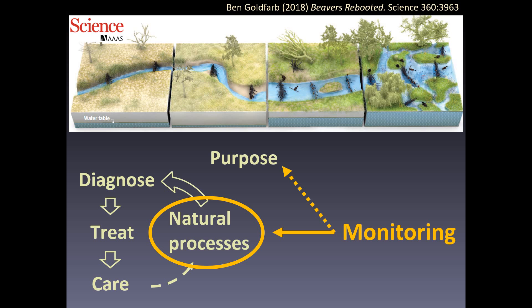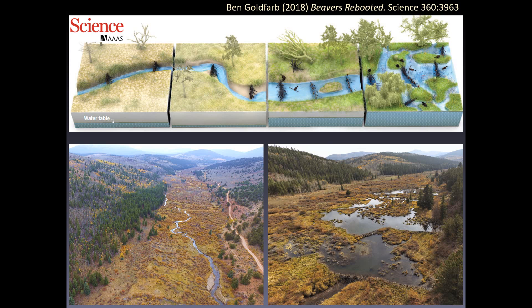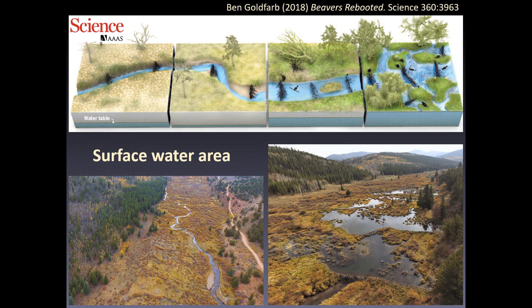You don't just make up objectives. You set expectations based on what natural processes are capable of in healthy restored ecosystems. The way we think about it, the most important things to monitor are the natural processes that best serve the purpose or benefits you or your sponsors hope to achieve. The graphic here is from Ben Goldfarb's 2018 Science Magazine article titled 'Beavers Rebooted,' which beautifully illustrates some of the natural processes we expect to be reignited when a beaver wetland is restored from a channelized stream. The first process most people realize is that beaver complexes retain water — we can expect increased surface water area. This is important because it indicates the amount of aquatic habitat available to species that need it, like fish and amphibians, aquatic mammals, waterfowl, macroinvertebrates, and birds.